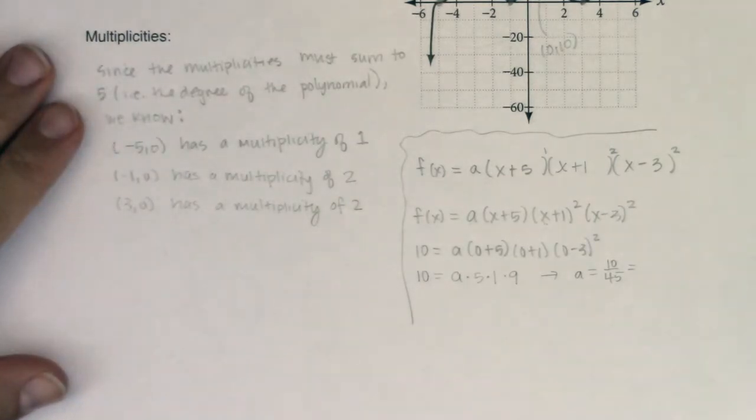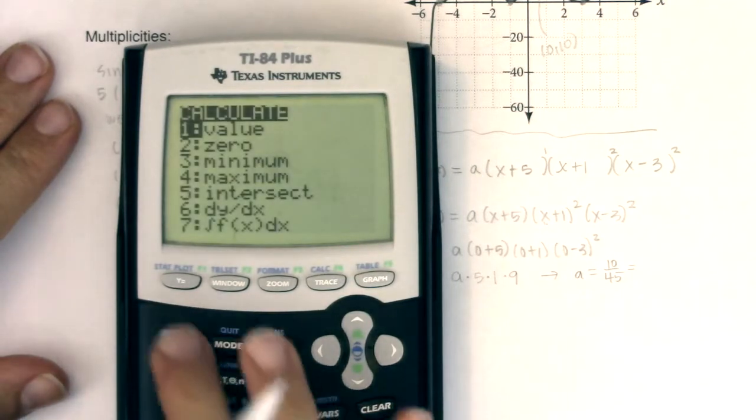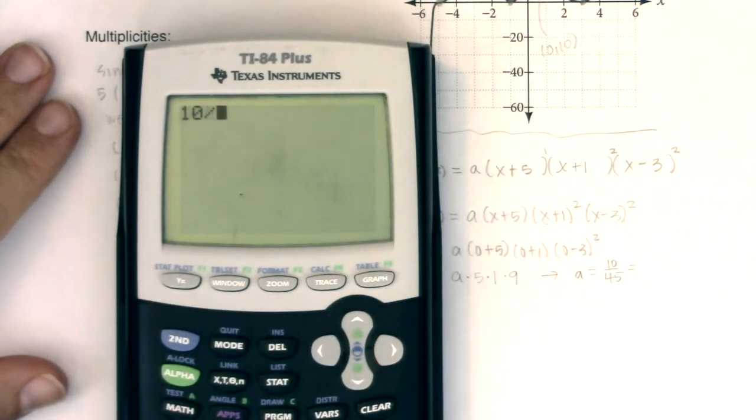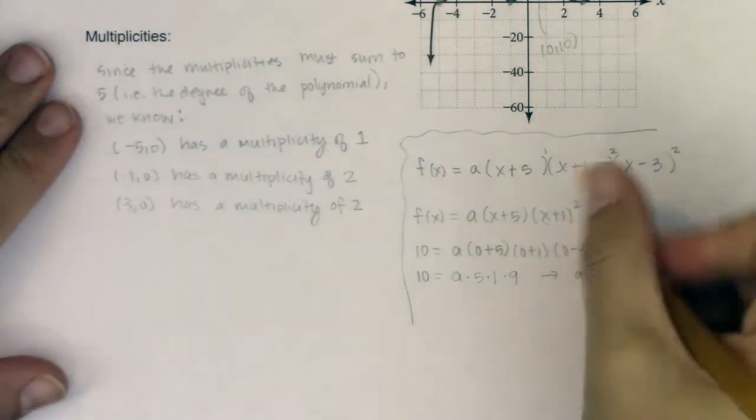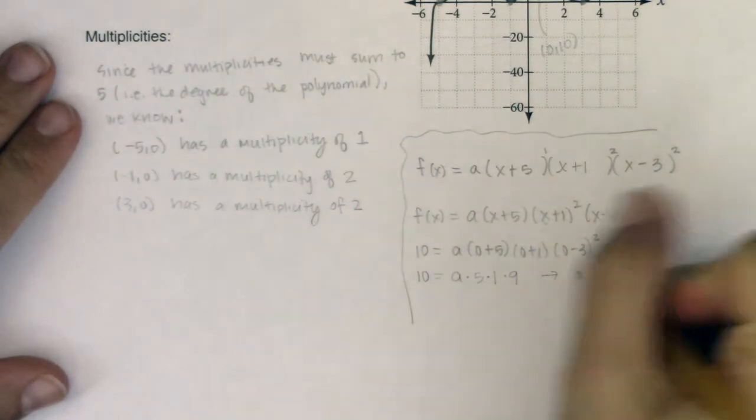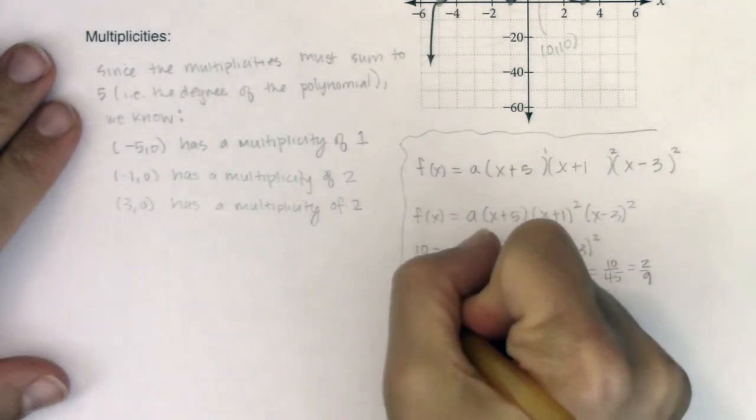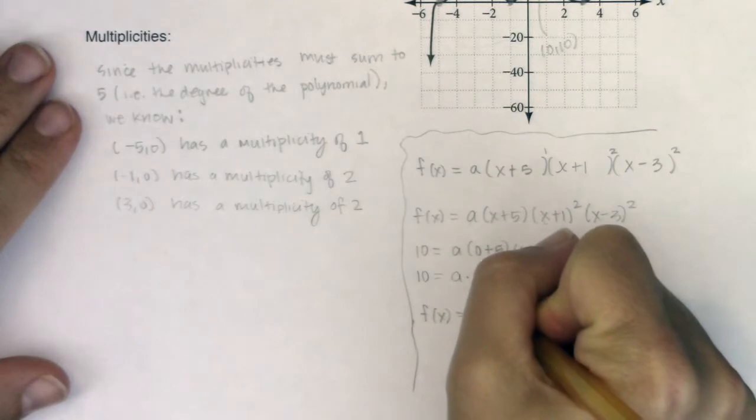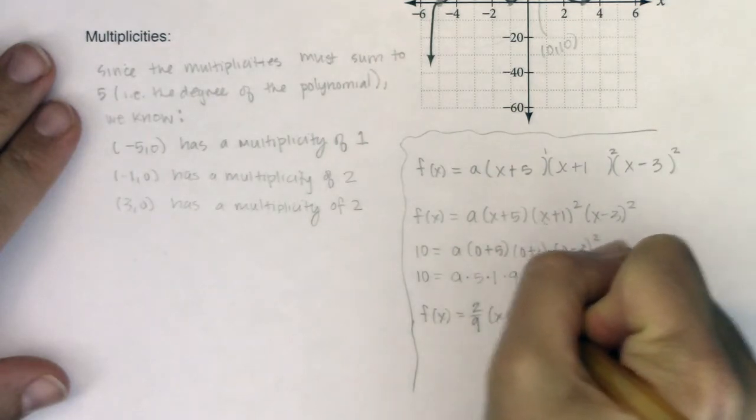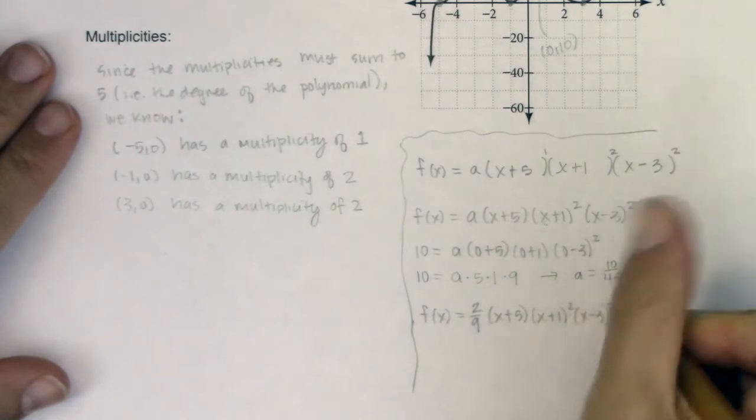You can simplify that in your head, or your calculator will simplify that to 2 ninths for you. So I could write 2 over 9. So ultimately, this would be 2/9 times (x + 5) times (x + 1) squared times (x - 3) squared. So I went from that graph to my function based on multiplicities and the x and y intercepts.